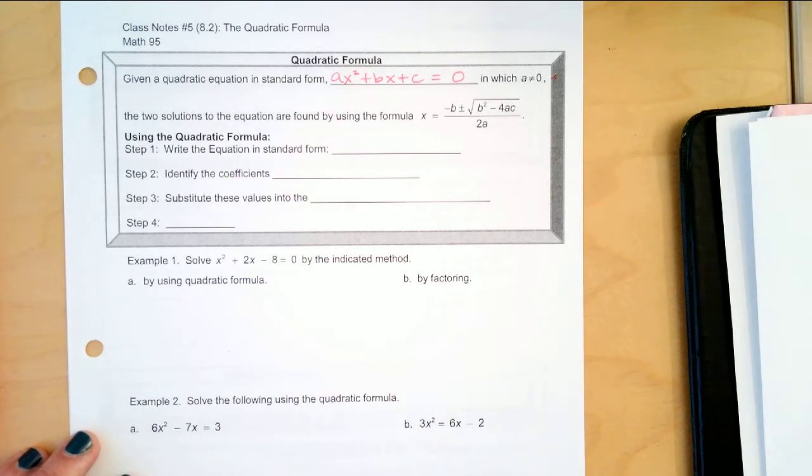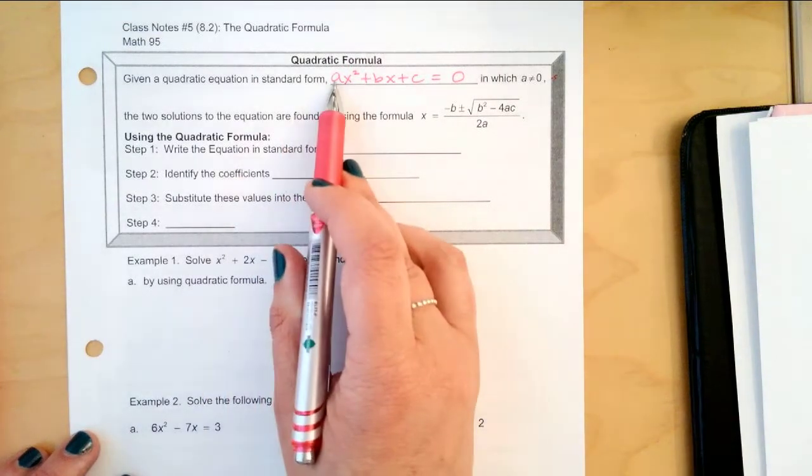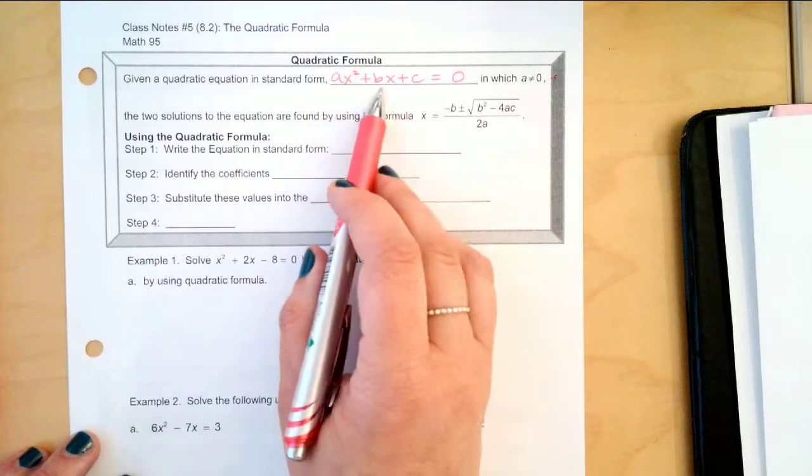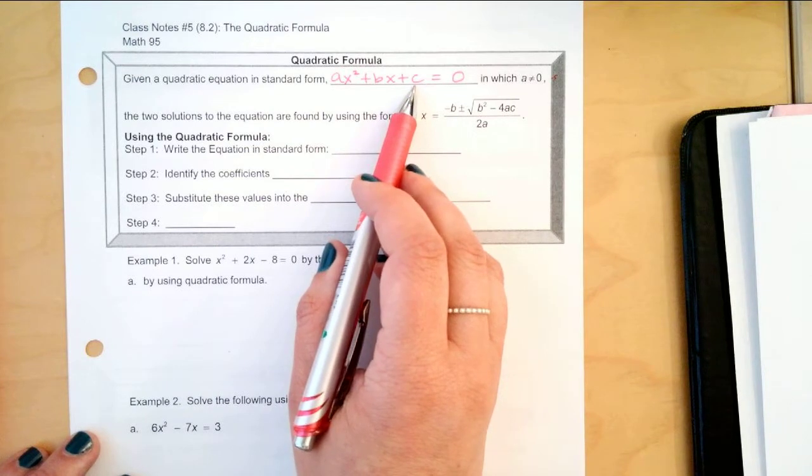Okay, where a is not 0, because if a were 0, this x squared would be gone, and you would have actually a linear equation, which would be left.